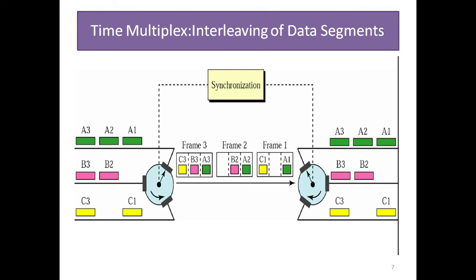Time multiplex interleaving of data segments requires synchronization — bit synchronization and frame synchronization — which will be covered in the next video. There are a number of users: a1, a2, a3, b2, b3, c1, c3. These are synchronized using frames — frame 1, frame 2, frame 3 — and used by each user accordingly.